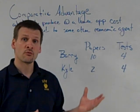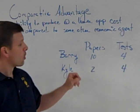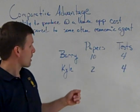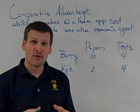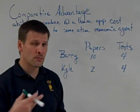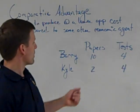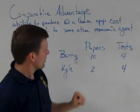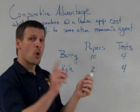The first thing we have to do is look at the information we're given. In this case, Barry can grade ten papers or he can write four tests. I can grade two papers or I can write four tests. We then have to figure out the comparative advantage — that's usually what the problems ask us to do. To find Barry's opportunity cost when he writes papers, I need to figure out how many tests he gives up when he writes one paper.